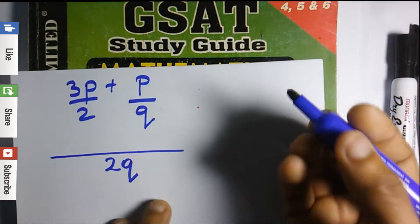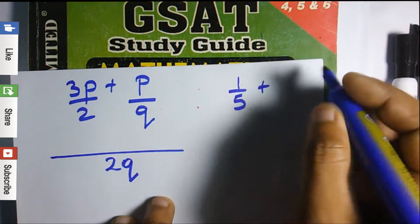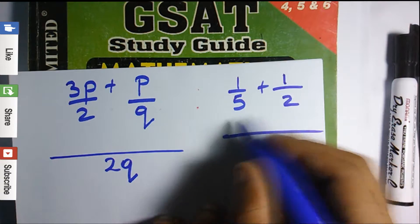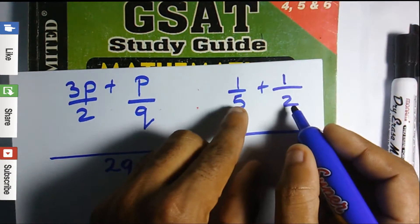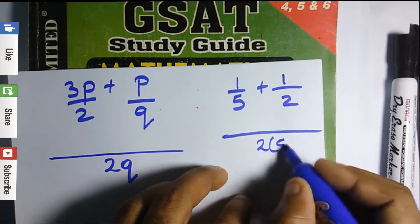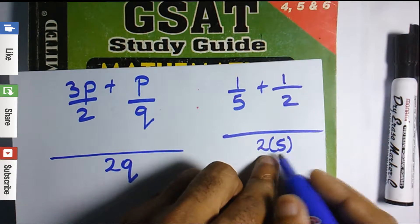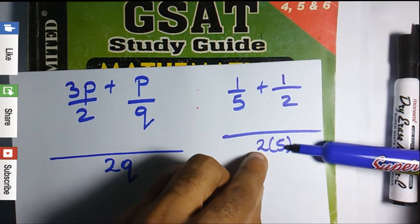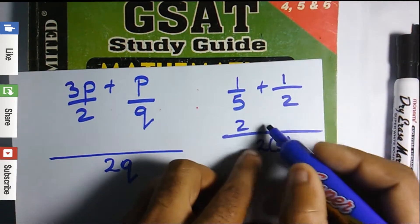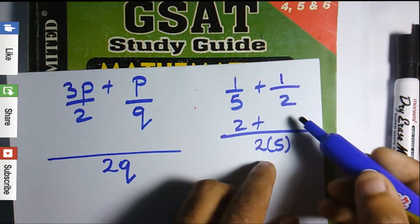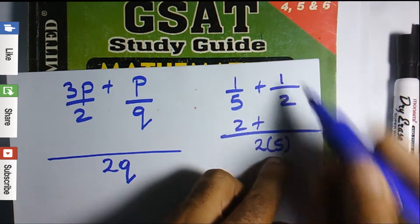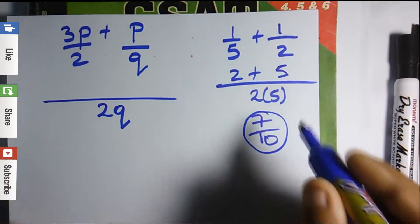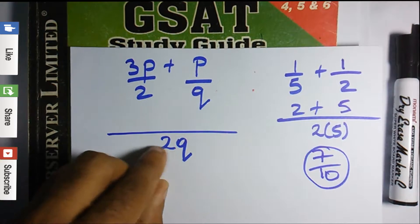For example, consider 1/5 + 1/2. The LCM for this is 10. One way to get 10 is to multiply 2 times 5, so we can write the LCM as 2 times 5. Then 5 into 10 goes 2, giving us 2 times 1 which is 2, and 2 into 10 goes 5. So the result is 7/10. The same procedure applies to our question.